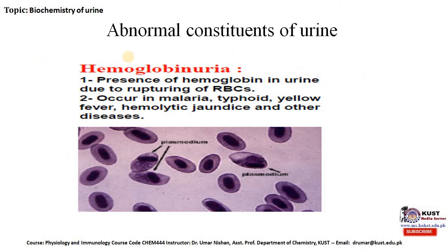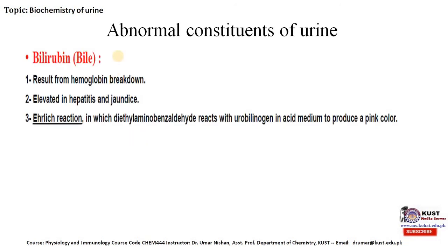In another situation called hemoglobinuria, the presence of hemoglobin in urine occurs due to the rupturing of RBCs. This situation is seen in malaria, typhoid, yellow fever, hemolytic jaundice, and other diseases. There is also a situation where bilirubin or bile can be found in urine, resulting from hemoglobin breakdown. Elevated and accelerated levels are found in hepatitis and jaundice. The average reaction involves diethylaminobenzaldehyde reacting with urobilinogen in an acid medium to produce a pink color.